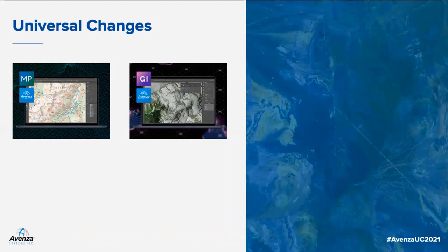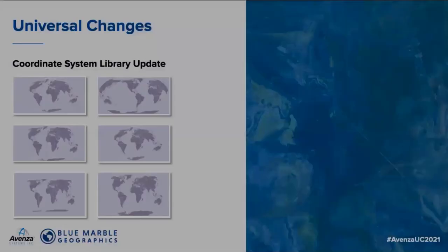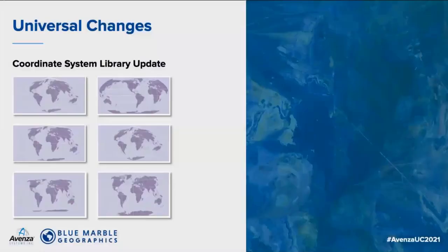Now to improvements we've made recently to both Map Publisher and Geographic Imager and what we're currently working on. We are working continuously to improve the back-end Map Publisher engine to ensure our users can continue their work in an optimized, seamless, design-focused cartographic environment.